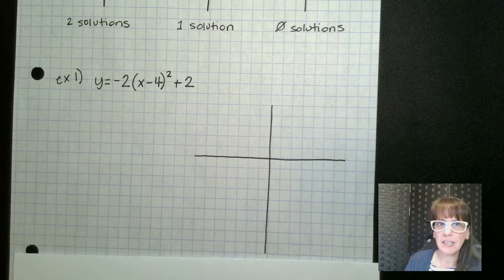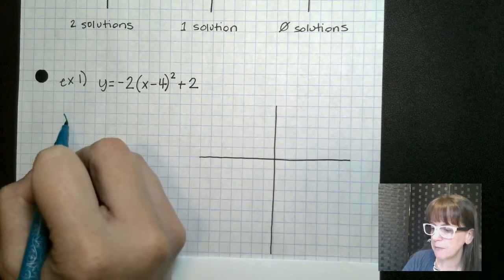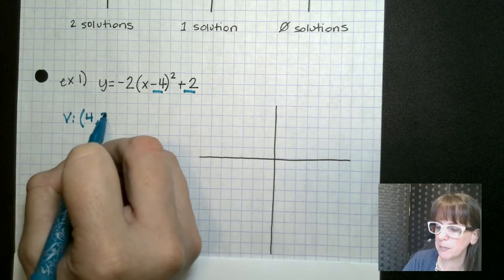All right, so we've got this guy right here. This is in vertex form. So in order for us to identify our vertex, remember it's opposite this, regular that. So four comma two.